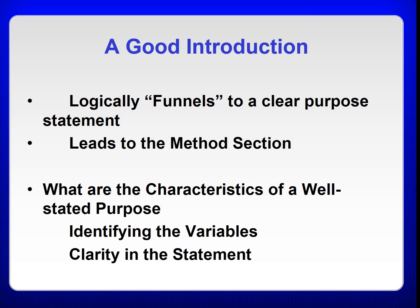The independent variable is the experimental or treatment variable — it is the cause. The dependent variable refers to what is measured to assess the effects of the independent variable — it is the effect. The confounding variable is a moderator variable, a kind of independent variable that cannot be manipulated, such as age and race. The control variable is a factor that could possibly influence the results and is kept out of the study. The extraneous variable is a factor that could affect the relationship between the independent and dependent variables but is not included or controlled.